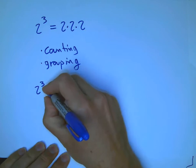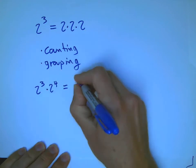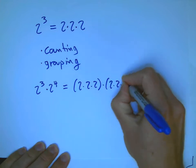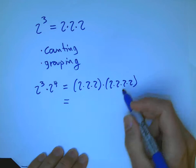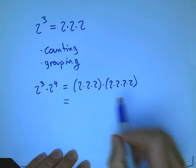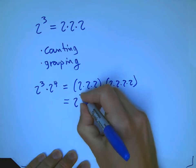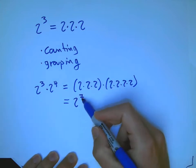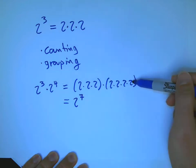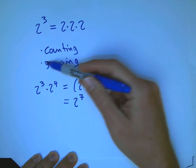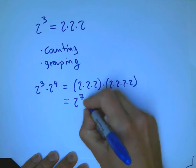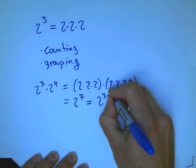Let's look at 2 to the 3 times 2 to the 4. That's 3 twos times 4 twos. If we wanted to simplify that, we could recognize the parentheses aren't doing much — that's just 7 twos put together. Why 7? It's 3 plus 4 — however many are in this group plus however many in this group. We're just ignoring the grouping, and that's 2 to the 3 plus 4.